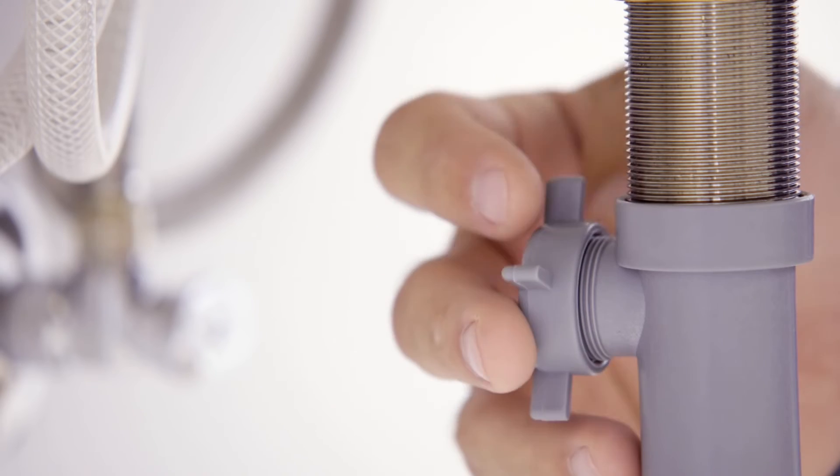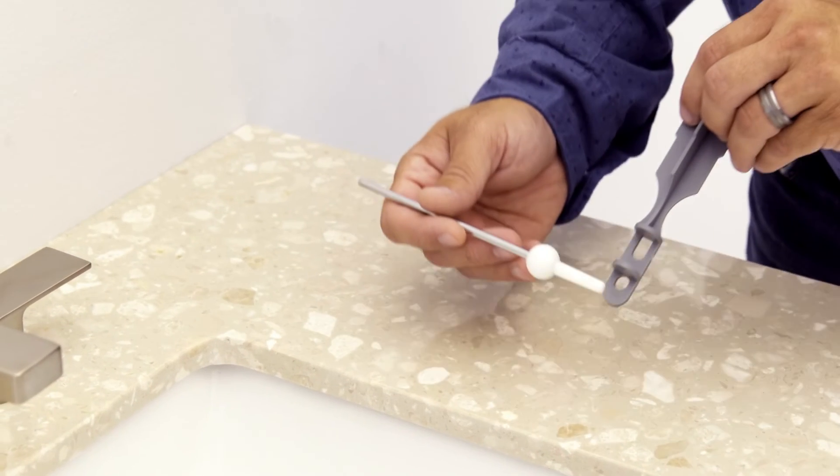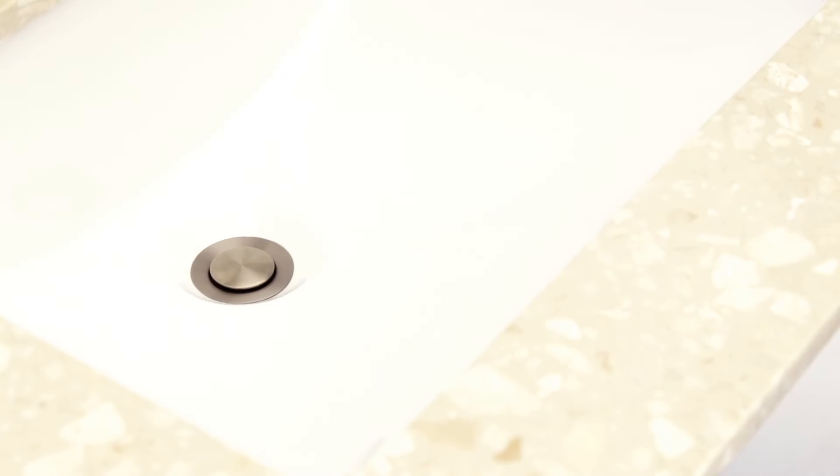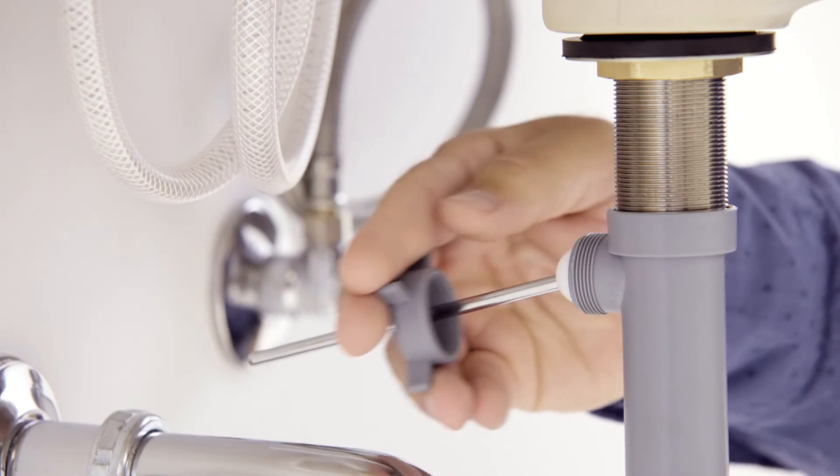From the tailpiece, remove the pivot nut and install the stopper as removable or non-removable. We're installing ours as removable. Install the horizontal rod and hand tighten the pivot nut.